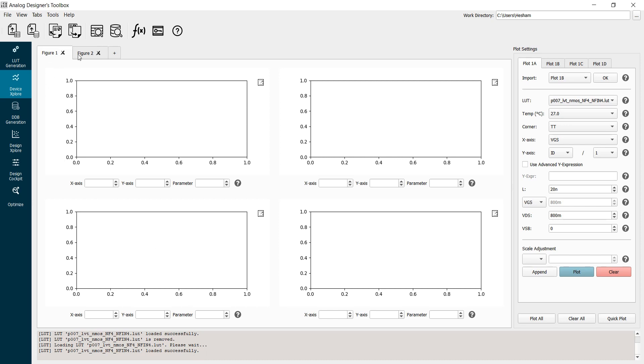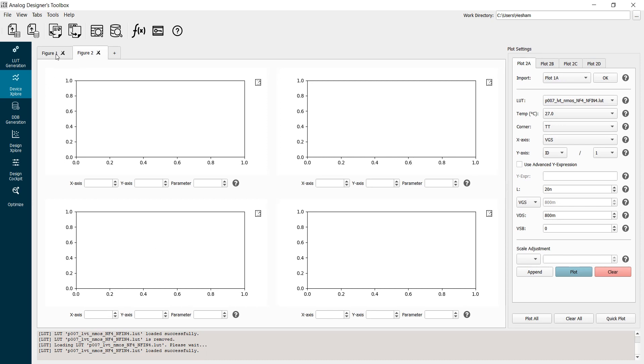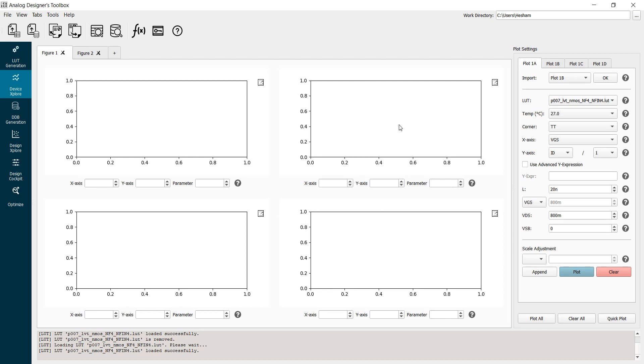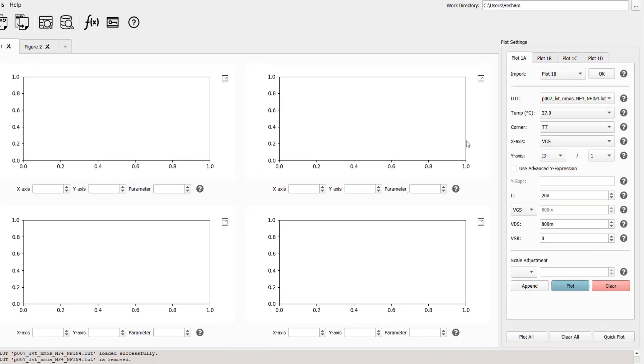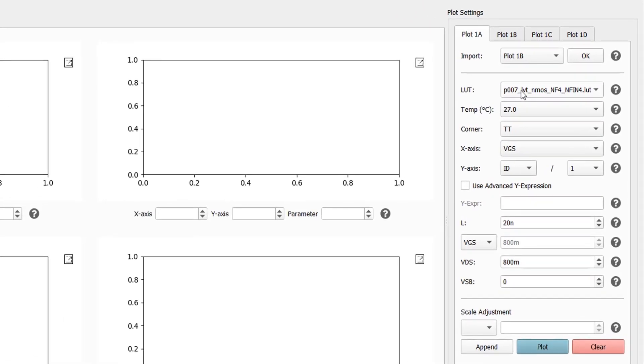Here I can have multiple figures, and every figure contains four plots. If I click a plot, its settings show up here on the right. So let's click plot 1A. This is my lookup table. It is characterized at a single temperature and a single corner. I will select VGS for the x-axis and Id for the y-axis.